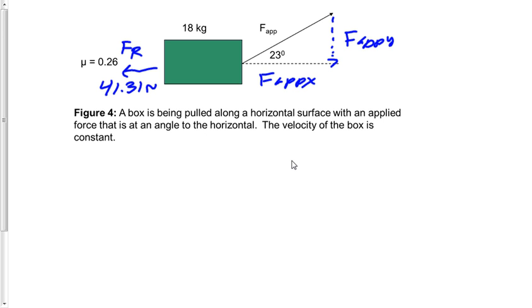Now, since the velocity of the box is constant, we now know that the force of friction is equal to the force applied in the x direction. Of course, we do have force gravity downwards and force normal upwards.